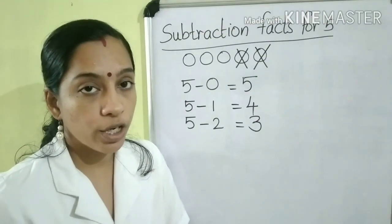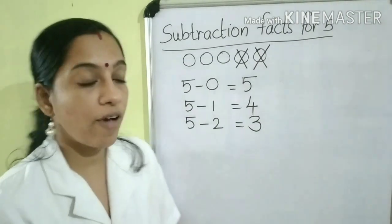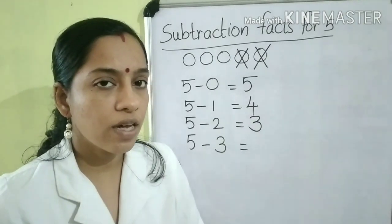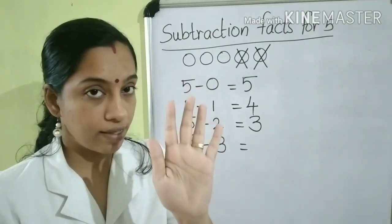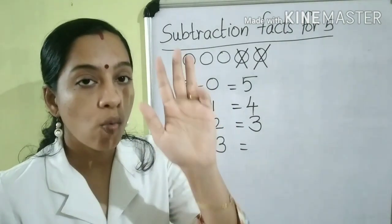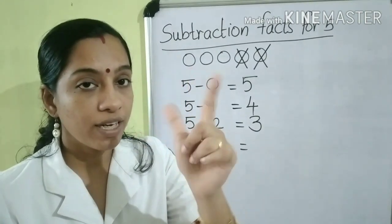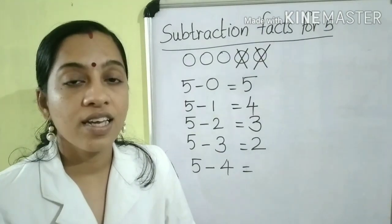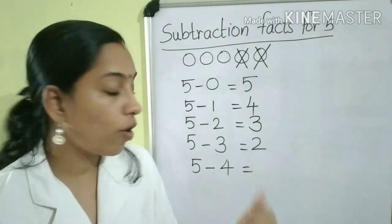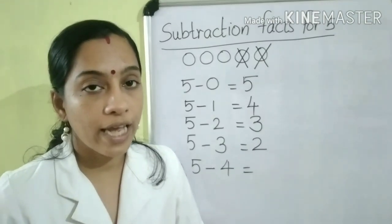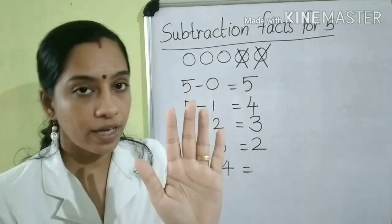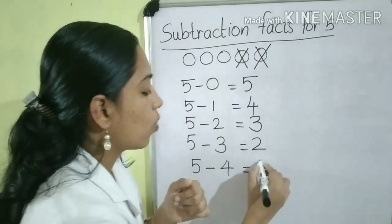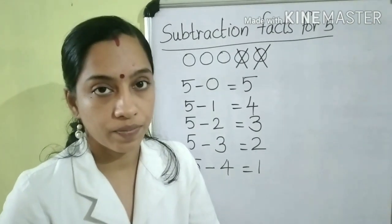Next, we are going to subtract 3 from 5. 5 minus 3 — what will be the answer? Take 5 fingers and fold 3: 1, 2, 3. How many fingers are left? 2. That is, 5 minus 3 is equal to 2. Next, we are going to subtract 4 from 5. Take 5 fingers and fold 4 fingers: 1, 2, 3, 4. How many fingers are left? 1. So, 5 minus 4 is equal to 1.